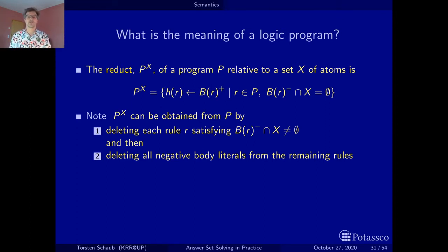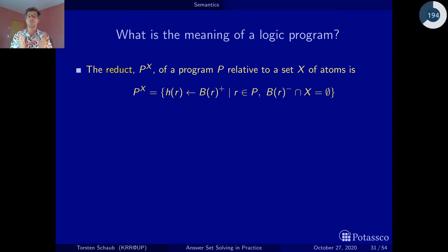And now, that's it. We can define the stable model semantics. Before I do that, I should actually mention this. I'm so excited about introducing to you the stable model semantics, that keep in mind that when we do the reduct and we transform the program into a positive logic program, we only evaluate the negative body literals and they are then also more or less stripped of the program that results from this. So now, finally, with the reduct we can define what a stable model is.